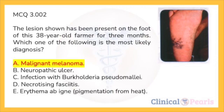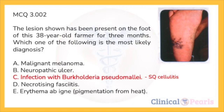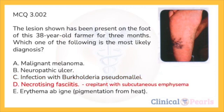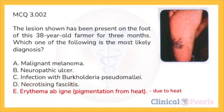A is correct. Any change in the appearance of a pigmented skin lesion should arouse clinical suspicion; the lesion will need complete excision and histological confirmation. Neuropathic ulcers characteristically occur over pressure points in insensitive areas associated with diabetes, syphilis, leprosy, and other neuropathies. Limb lesions due to Burkholderia pseudomallei are usually subcutaneous cellulitis following skin abrasions. Necrotizing fasciitis causes a spreading anaerobic subcutaneous infection, often crepitant with subcutaneous emphysema; diabetics are particularly prone. Erythema ab igne describes cutaneous tanning caused by chronic local application of heat.